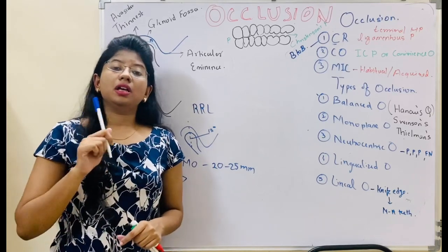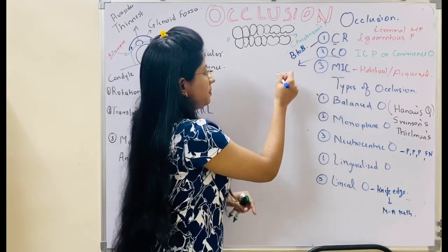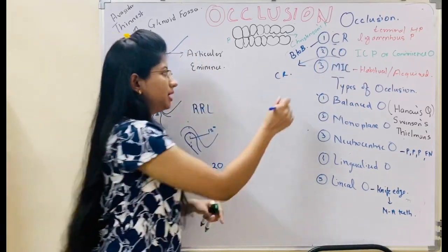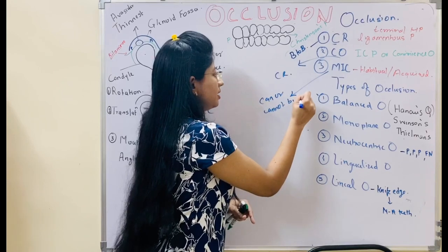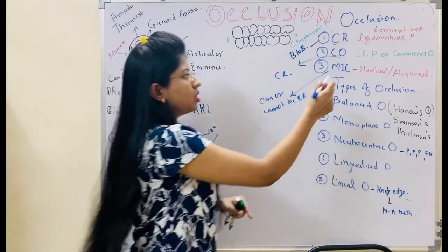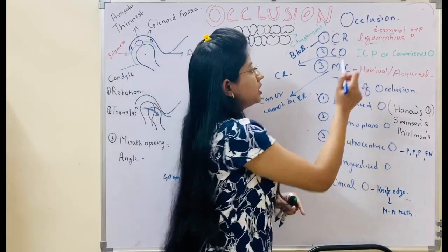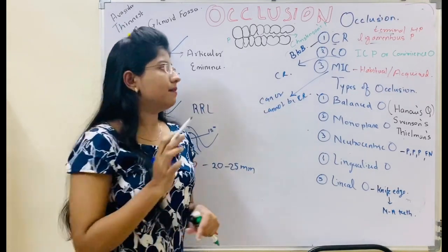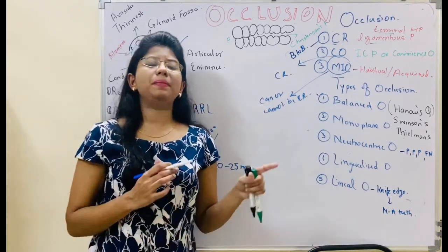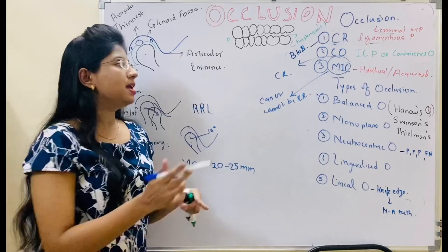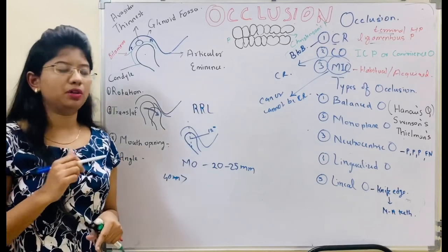In maximum intercuspation, the condyle will not necessarily be in centric relation. Centric occlusion most times has the condyle in centric relation, but in maximum intercuspation it can or cannot be in centric relation. Centric relation is also called the terminal hinge position or ligamentous position. Centric occlusion is also called convenience occlusion, while maximum intercuspation is called the habitual or acquired position. In most patients, maximum intercuspation will coincide with centric relation in about 10% of cases — important for MCQs.